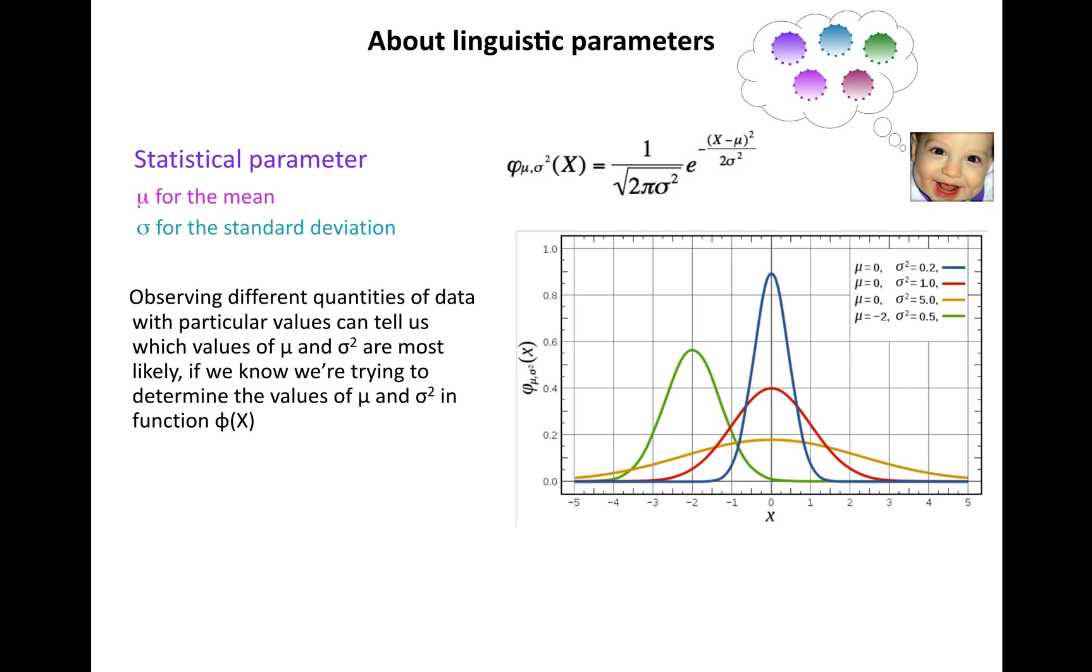We basically do that from the observable data that we encounter. If we observe different quantities of data with particular values, that can tell us which values, in this case of μ and σ², are most likely if we're trying to determine those values in this function.